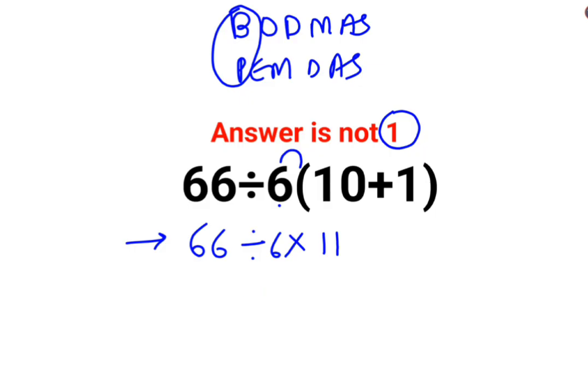So at this point you need to realize that whether you are following BODMAS or PEMDAS, division and multiplication hold equal precedence. So in sums like these, you need to go from left to right. Whatever operation happens first on your left hand side has to be done first.